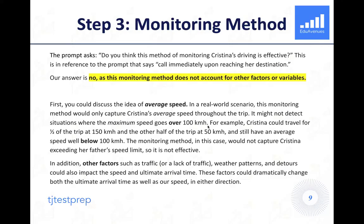A good example of this: Christina could travel for half of the trip, like half of the distance at 150 kilometers per hour. She could travel the other half of the trip at 50 kilometers per hour, and her average speed would still be below 100 kilometers per hour. So even though she violated the limit by going at 150, her father wouldn't necessarily know. This monitoring method, in this case, would not capture Christina exceeding her father's speed limit. So we can easily say that it's not effective.